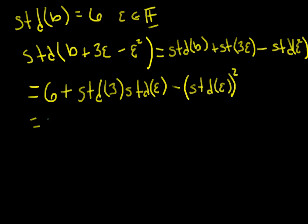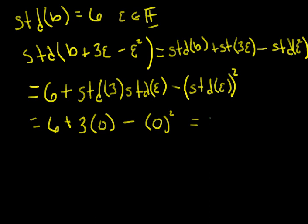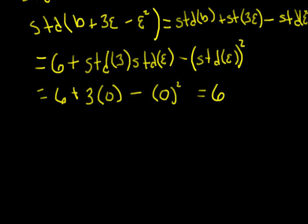So this is 6. 3 is a real number and its standard part is 3 itself — it's really close to itself. The standard part of epsilon, though — it's an infinitesimal — so its standard part is 0 by the previous theorem. So this is 3 times 0, minus — and again the standard part of epsilon is 0 — so this is 0 squared. Finally, this is equal to 6. So if the standard part of B is 6, what we're seeing is that if we add an infinitesimal, it doesn't change anything. The standard part is still 6.